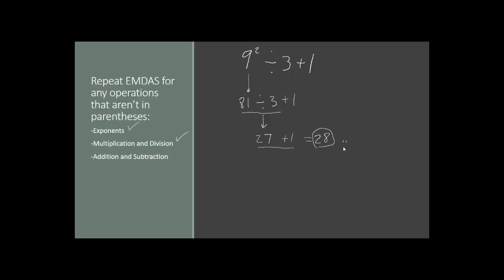And that is our final answer. Just to recap: in order to condense really complicated-looking fractions, the best thing to do is rewrite them as a division and then follow your standard order of operations — exponents, then multiplication and division, then addition and subtraction. Always make sure you do your parentheses operations before anything outside the parentheses. Thank you very much for watching. We'll see you next episode.